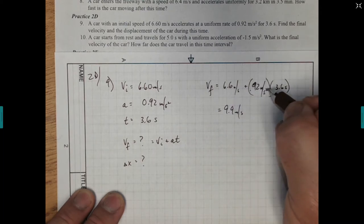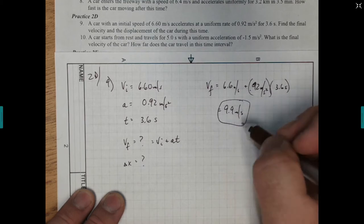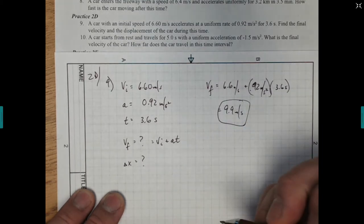And we end up with 9.9 meters per second. Because the seconds cancel when we use that. We have meters per second and meters per second. And we're done with that.